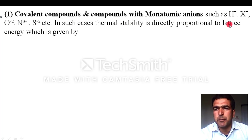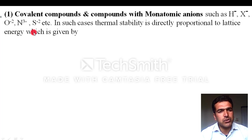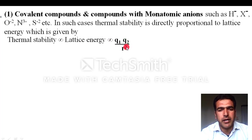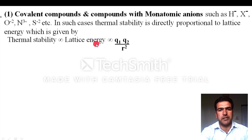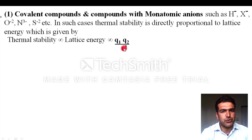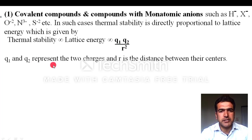For monoatomic anion compounds, thermal stability is directly proportional to lattice energy. Lattice energy is directly proportional to Q1·Q2/r², where Q1 and Q2 are the charges on the ions and r is the distance between the two centers. So lattice energy is inversely related with the distance between charges.